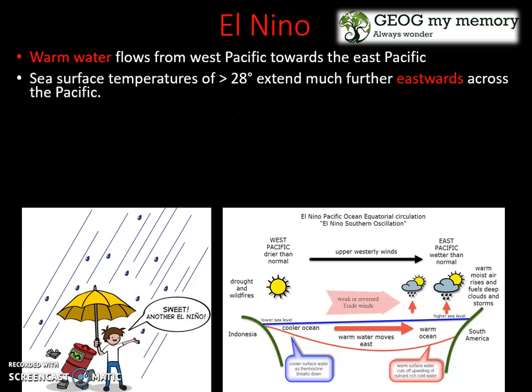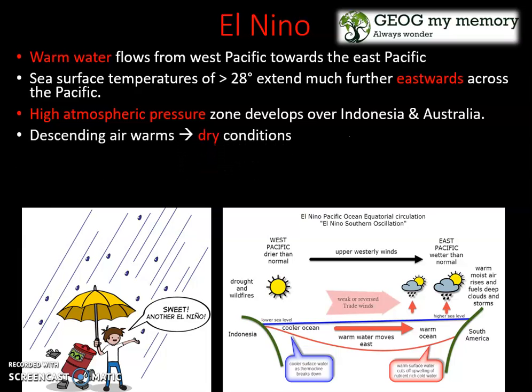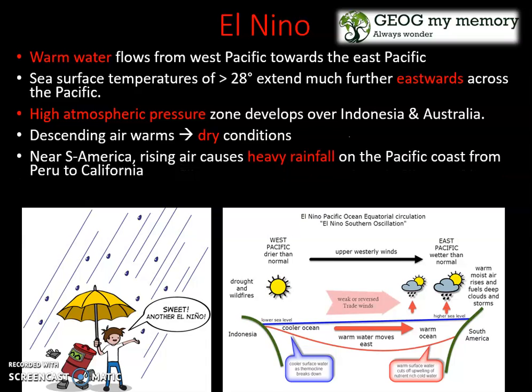greater than 28 degrees extend much further east across the Pacific. A high atmospheric pressure zone develops over Indonesia and Australia. The descending air warms, creating dry conditions near South America. The rising air causes heavy rainfall on the Pacific coast.